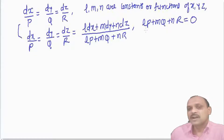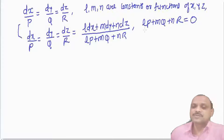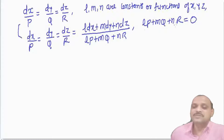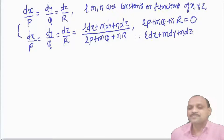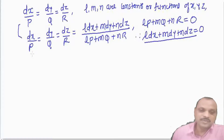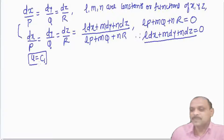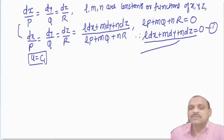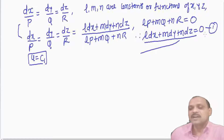So l, m, n are not arbitrary — we have the restriction to choose them such that l·P + m·Q + n·R = 0. If the denominator is 0, the numerator l·dx + m·dy + n·dz is also equal to 0. We can then integrate this relation and get a first relation u = c₁ as a solution.